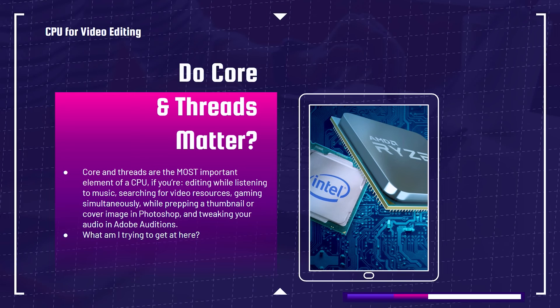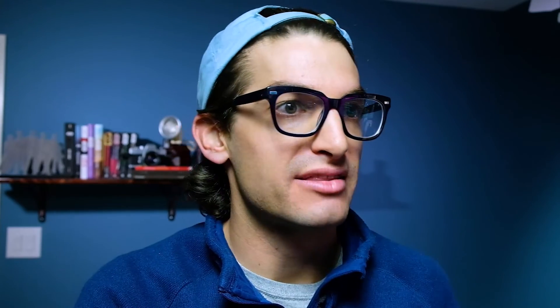Do cores and threads matter? That's a big question when picking out a laptop. It's hard to sift through all the marketing mumbo jumbo and think: what will actually make real-world performance in my app higher? Will it be more cores and threads? Will it be more clock speed? Will it be a better GPU? Let's talk about that right now.